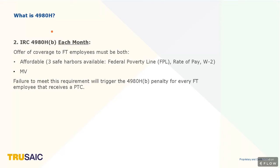If the plan is minimum value and affordable, the employee cannot get a subsidy on the exchange — they should be taking your plans — and you will avoid the B penalty.